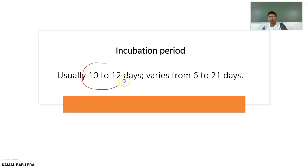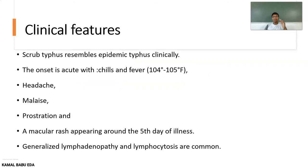The incubation period of Scrub Typhus is usually 10 to 12 days, and sometimes it may vary from 6 to 21 days. The average period is about 10 to 12 days.